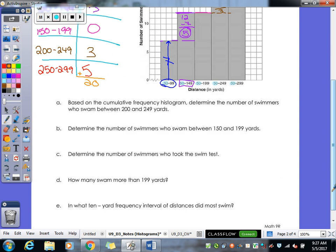So they want to know, based on the cumulative frequency histogram, determine the number of swimmers who swam between 200 and 249 yards. Well, we have that right here. That was 3 people. Do you guys even know how long 200 to 249 yards is? But in a pool. How many laps is that? Well, down and back is considered one lap, and that's 50 yards. So to go 200 yards, you have to go down and back 4 times. And then 250, you have to go down and back 5 times. So, has anybody ever done that before? No. It's not easy.